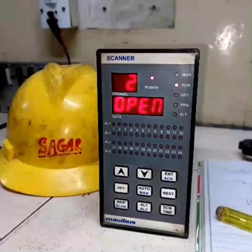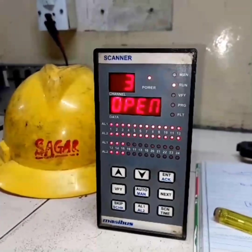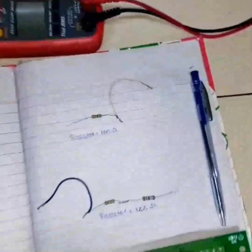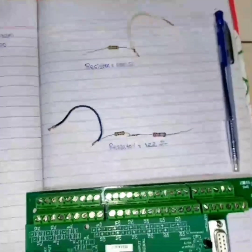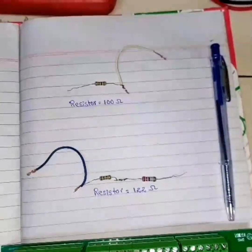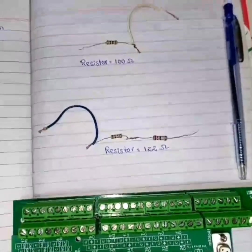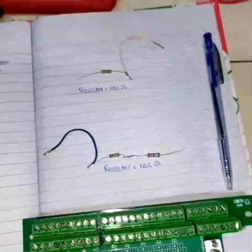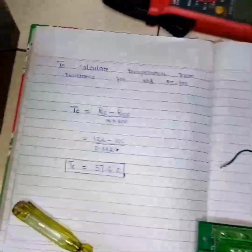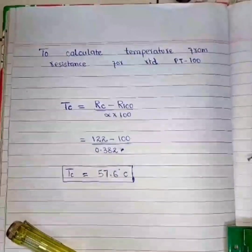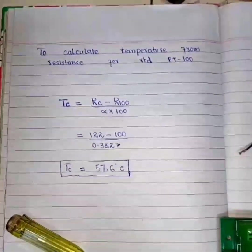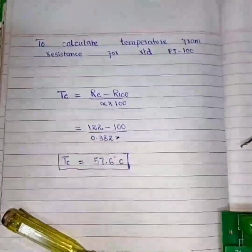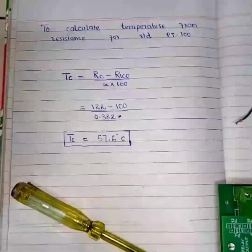We are going to calibrate the Scanner 85 double X Massibus. For that, we need two resistors: one of 100 ohm and another of 122 ohm. I did not have a 122 ohm resistor. We have a formula to calculate the temperature for PT100, which is TC equals RC minus 100 divided by 0.200. At 122 ohms, we should get 57.6 degrees Celsius temperature at the scanner.